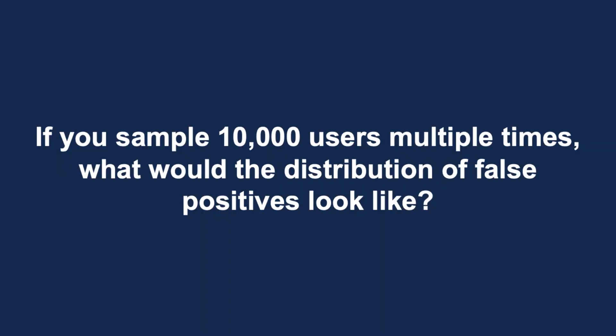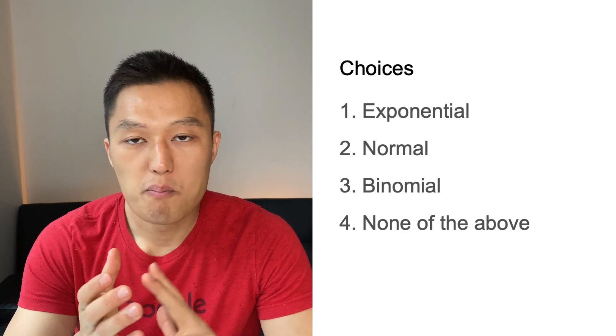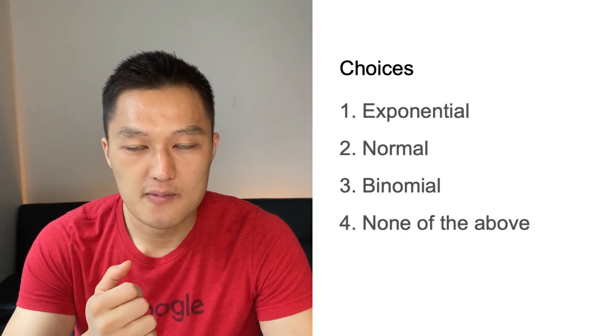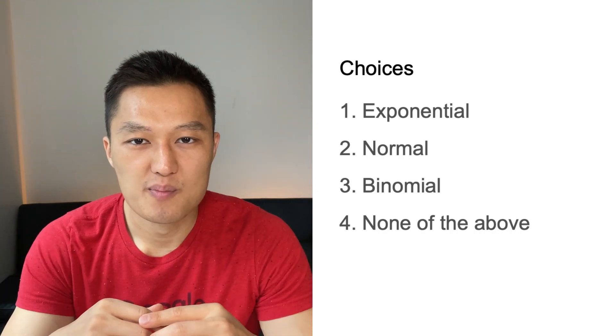The question is the following: if you sampled 10,000 users multiple times, what would the distribution of false positives look like? Briefly pause the video and think about the following choices — could it be exponential, normal, binomial, or none of the above? Think about your response and drop a comment below.